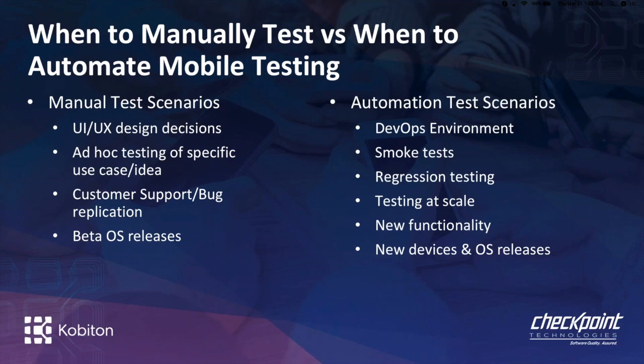Ad hoc testing for specific one-off use cases should stay manual. The same goes for customer support or bug replication — you want that resolved and validated as quickly as possible, who has time to create an automated test for that? And for beta OS releases, you really have no idea what the application is going to do on that device since you've never tested it. It's always best to have some kind of baseline in place before you start developing automated tests.